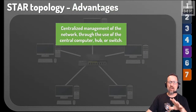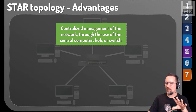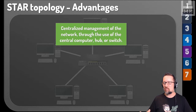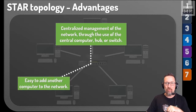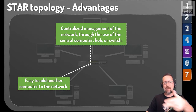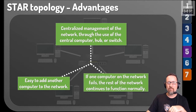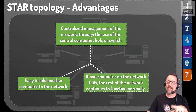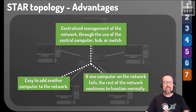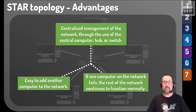Some advantages of a star topology: first, centralized management of the network through a central computer, hub, or switch. It's also very easy to add computers — they just slot into the next available port on the switch. If one computer fails, the rest of the network will continue to function normally, which is great.